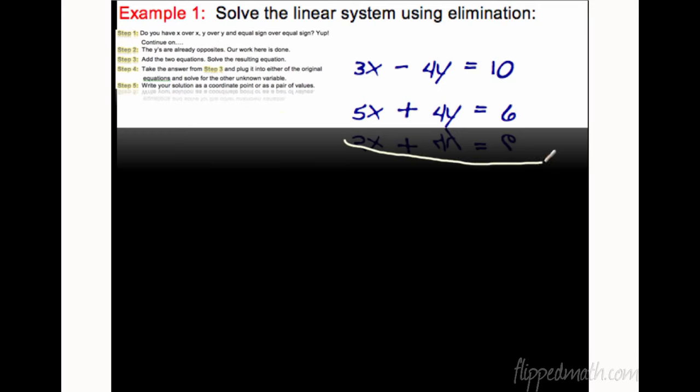Step three. You add the two equations. We're going to draw a line here. 3x plus 5x. Did you know you could do this? We're just going to add the two equations right up. So 3x and 5x is 8x. What's negative 4y and positive 4y? Guess what? They cancel. They go away. 10 plus 6 is 16.